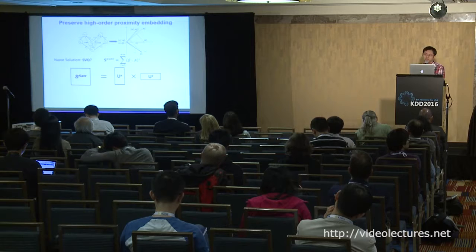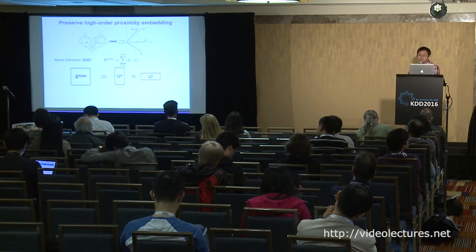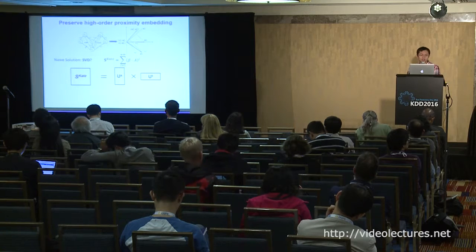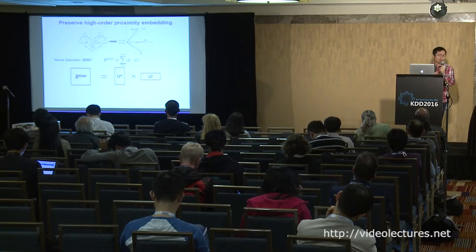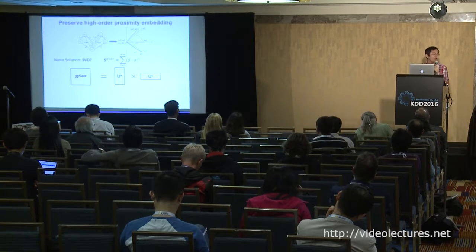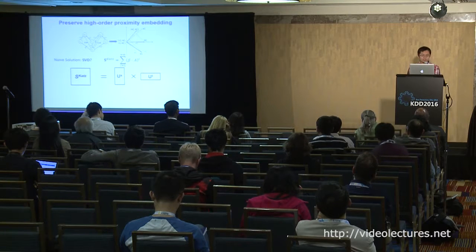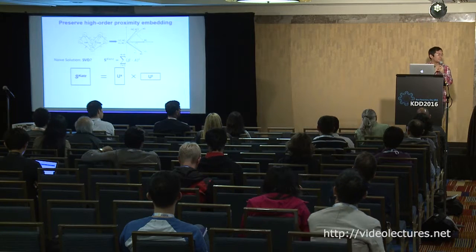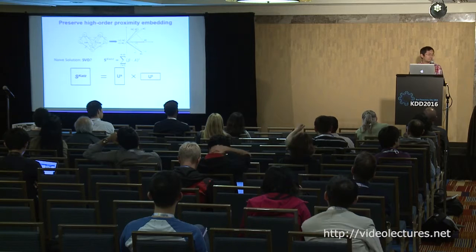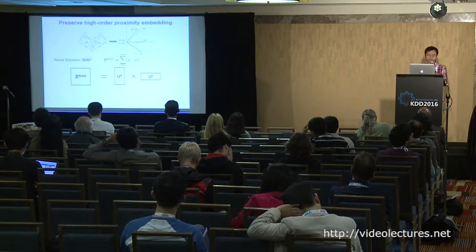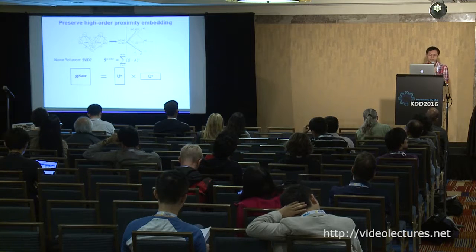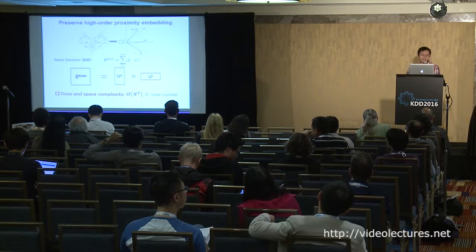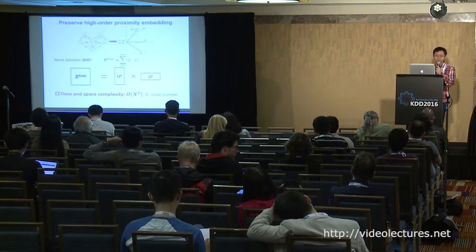This is a showcase of using high-order proximity to do graph embedding while preserving asymmetric transitivity. First we calculate the Katz index, then we use two vectors to preserve them. From a mathematical perspective this is a low-rank decomposition problem, and SVD — singular value decomposition — is the standard solution. However, this similarity is not the same as the adjacency matrix but a high-order proximity, so although the original matrix may be sparse, this similarity is not, making direct SVD unacceptable in terms of both time and space complexity.